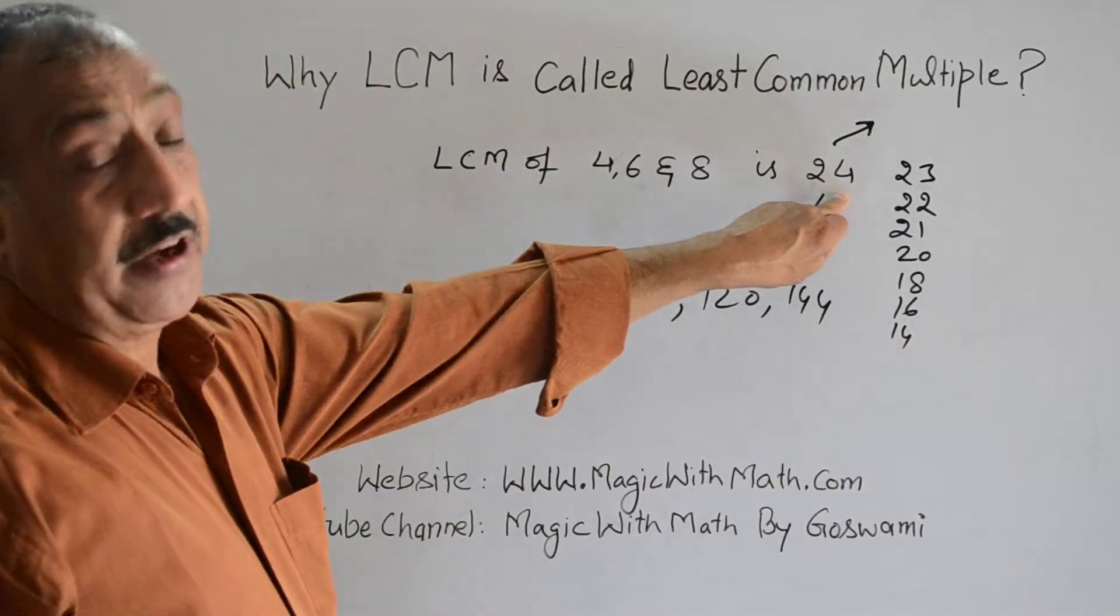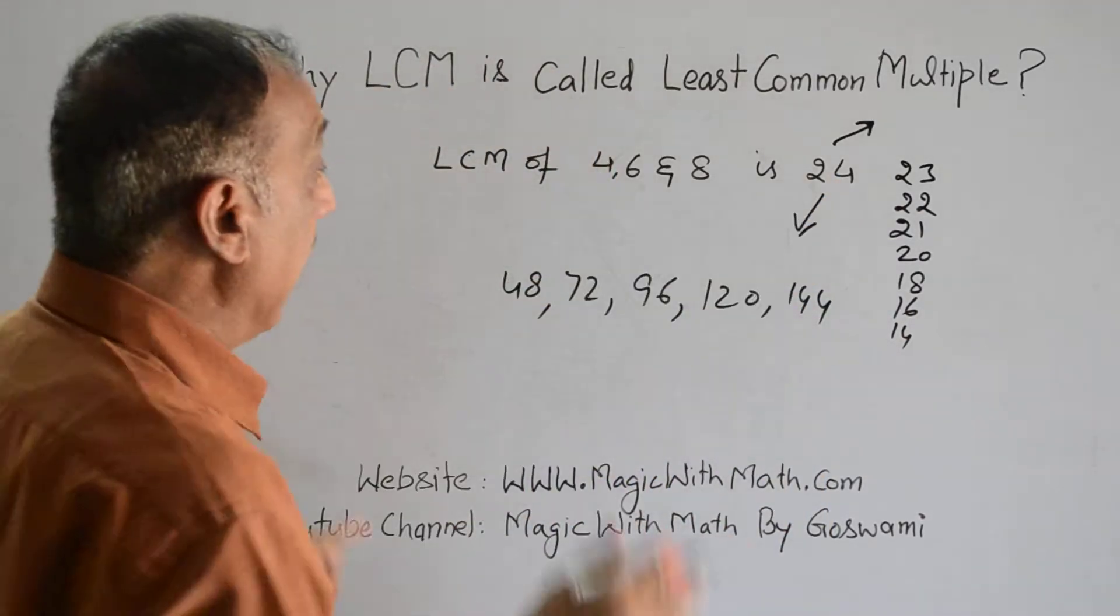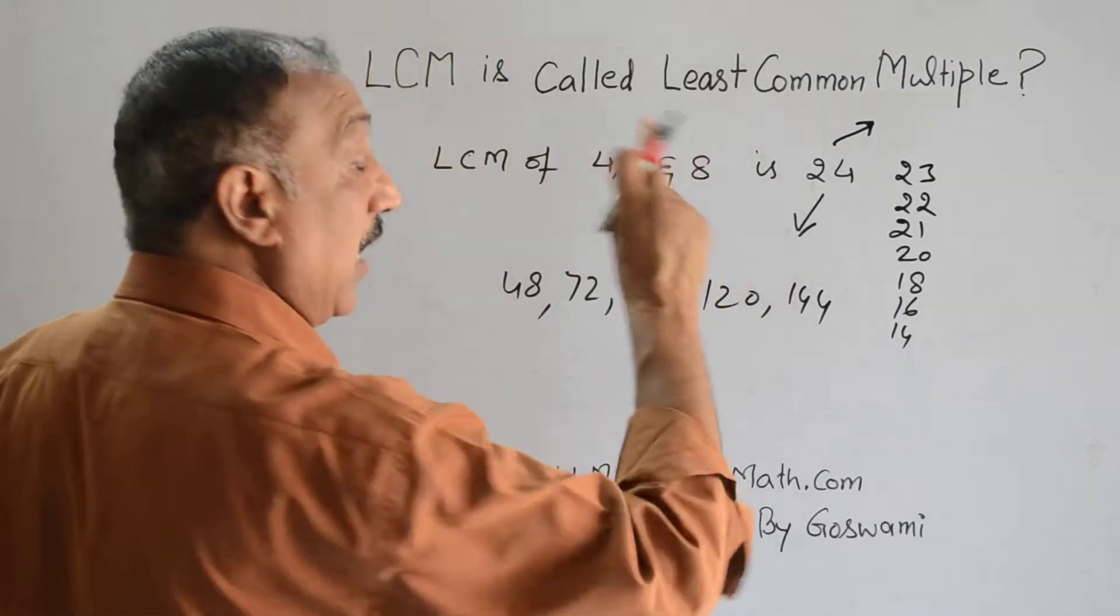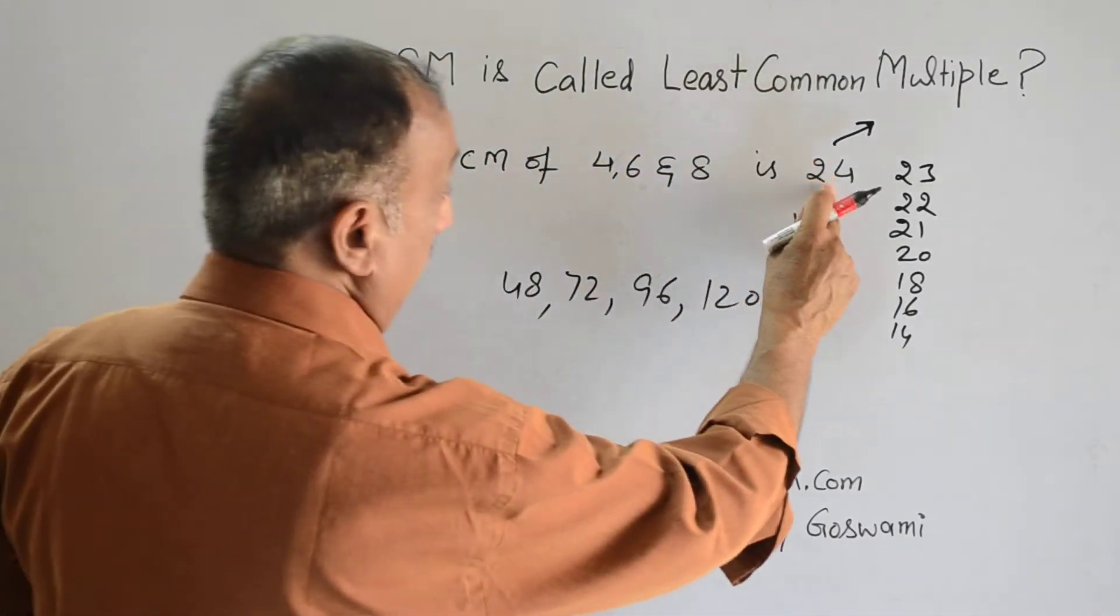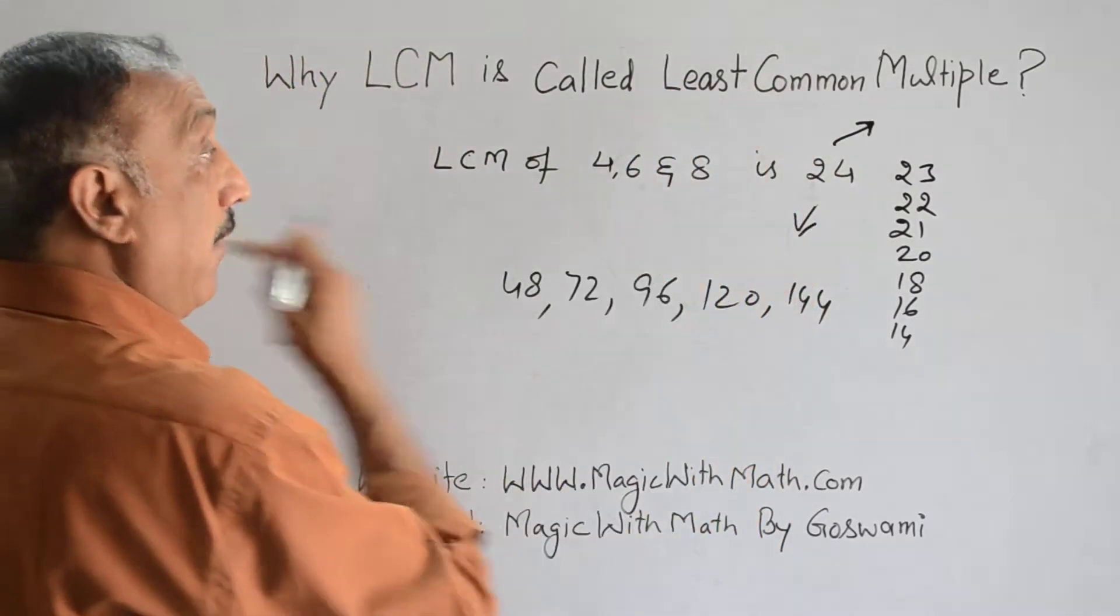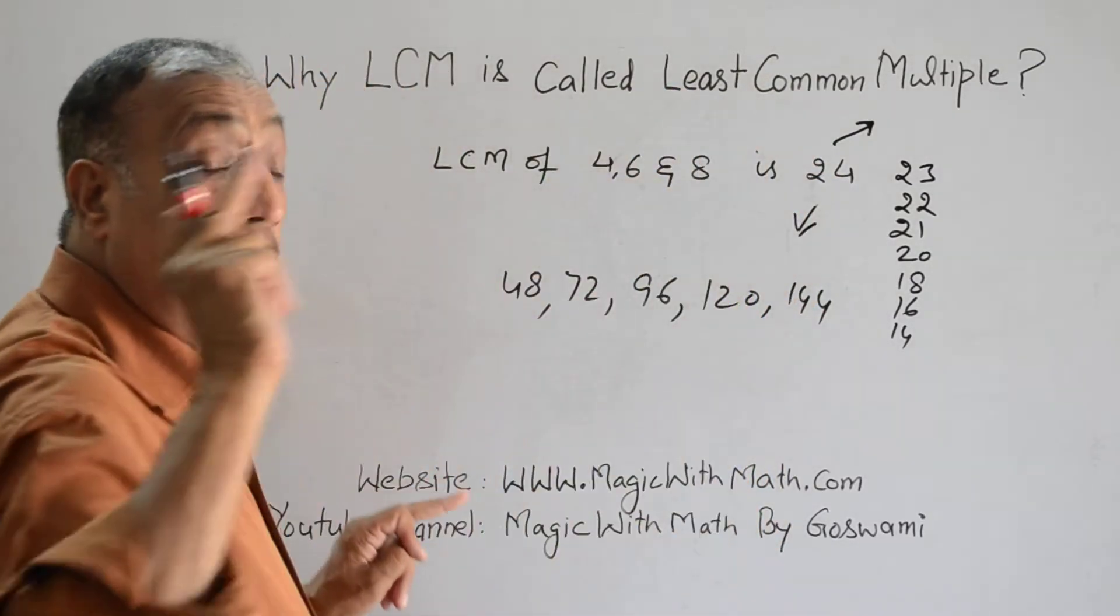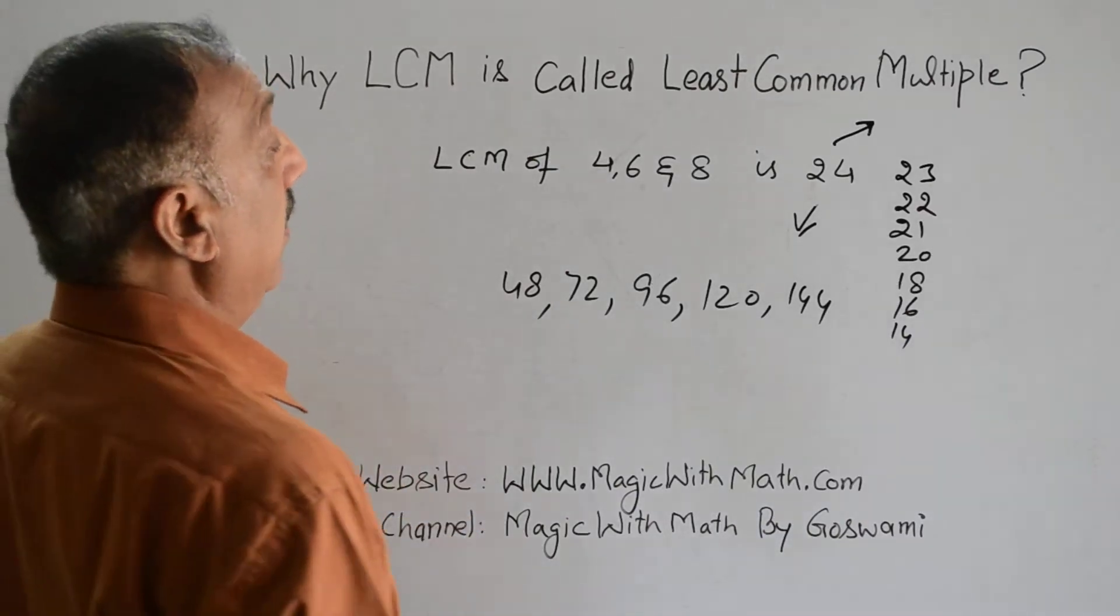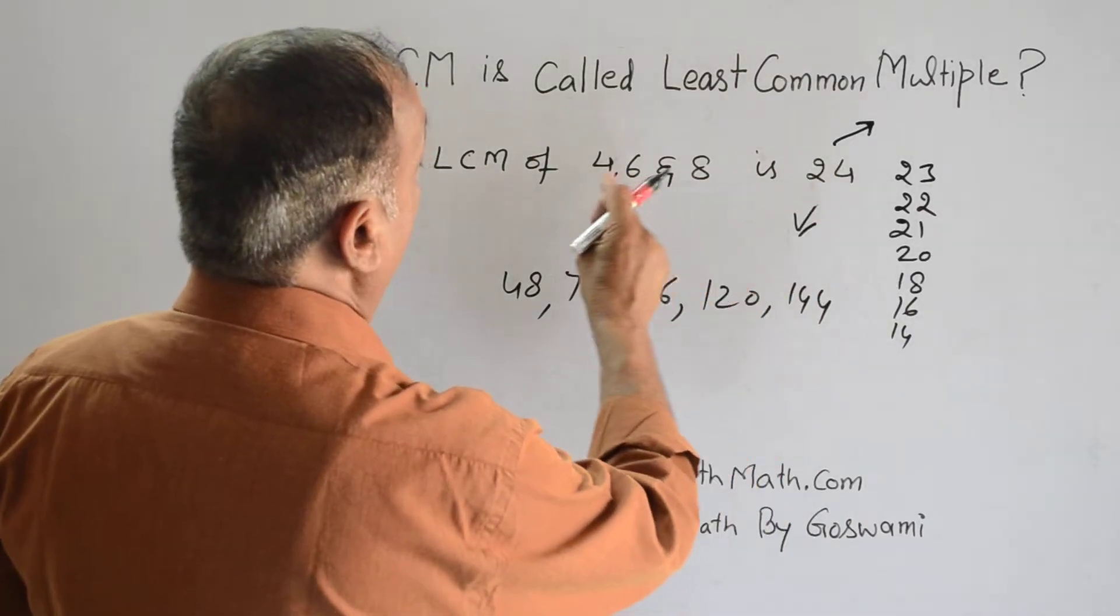Any multiple of 24 can be divided by 4, 6, and 8. There are so many numbers bigger than 24—all the multiples of 24 which can be divided by 4, 6, and 8—but there is not even a single number which can be divided by 4,